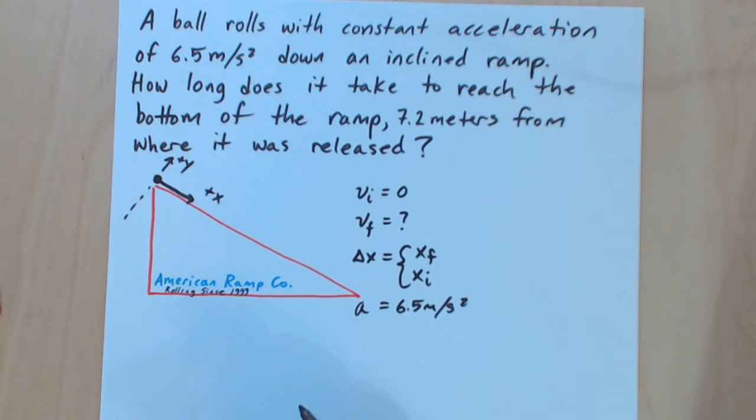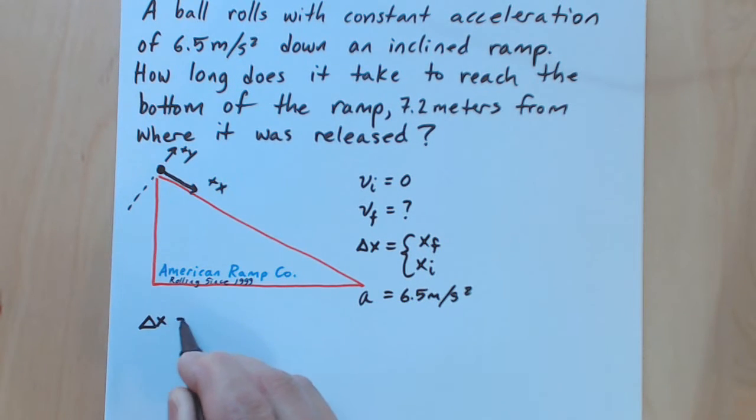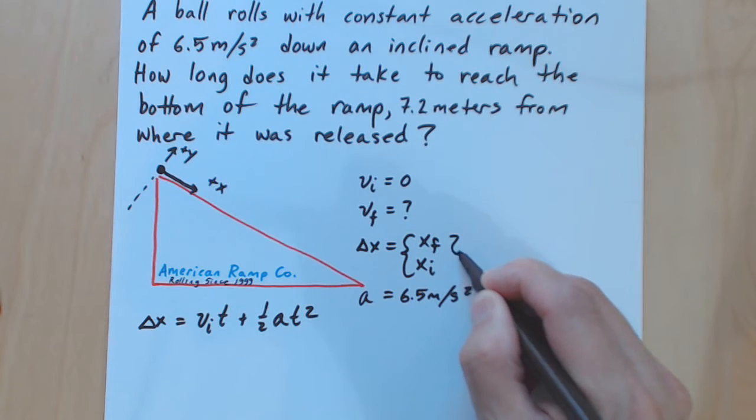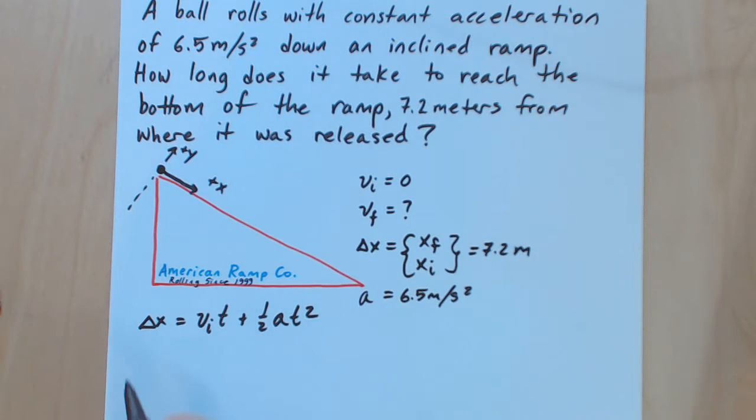Let's use our kinematic position time equation. Delta x is equal to v initial times time plus one half acceleration times the square of time. And there's the quadratic function in time. Now let's put in some values that we know. We do know that delta x is equal to 7.2 meters. V initial is zero, so we know that this term is going to go to zero because zero multiplied by time is equal to zero.